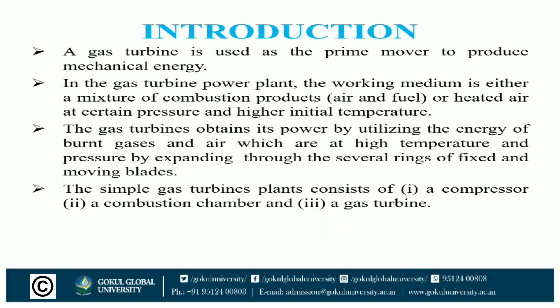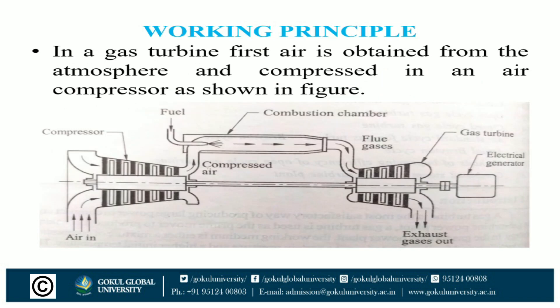A gas turbine is the most satisfactory way of producing large power in a compact unit. In a gas turbine power plant, the gas turbine is used as a prime mover to produce mechanical energy. The working medium is either a mixture of combustion products like air and fuel, or heated air at a certain pressure and temperature. The gas turbine obtains its power by utilizing the energy of burnt gases and air which are at high temperature and pressure, by expanding through the series of fixed and moving blades. The simple gas turbine power plant consists of three components: a compressor, a combustion chamber, and a gas turbine.